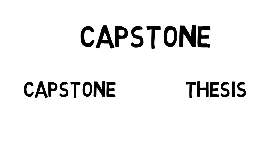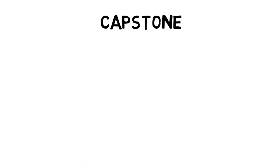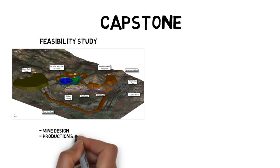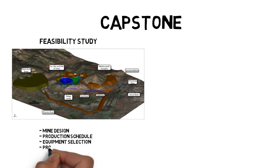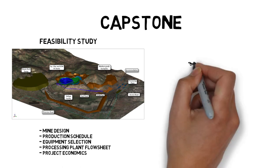Last but not least, you have your capstone project. For some schools such as Queens, you need to do both a capstone and a thesis; some other schools require one or the other. At UBC where I went, I only had to do a capstone. The capstone is where you put together everything you've learned into a project of your choosing. The traditional capstone for mining students is a feasibility study for a mine, which includes designing a mine, creating a production schedule, choosing the equipment fleet and size, designing a processing plant flow sheet, and evaluating the financials of the project to make an investment decision.